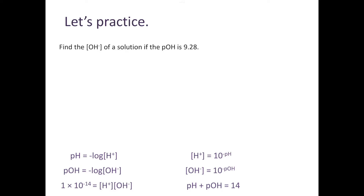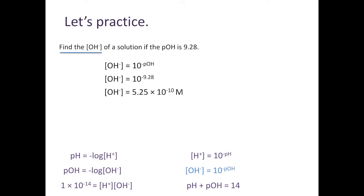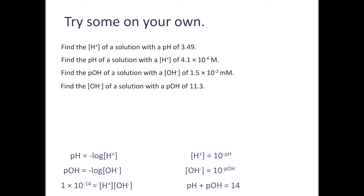Let's find the hydroxide ion concentration of a solution if the pOH is 9.28. The hydroxide ion concentration equals 10 to the negative value of our pOH. Taking 10 to the negative 9.28 gives a hydroxide ion concentration of about 5.25 times 10 to the negative 10th molar. Now would be a great time to pause this video and try a few practice problems on your own before we come back and check your answers.